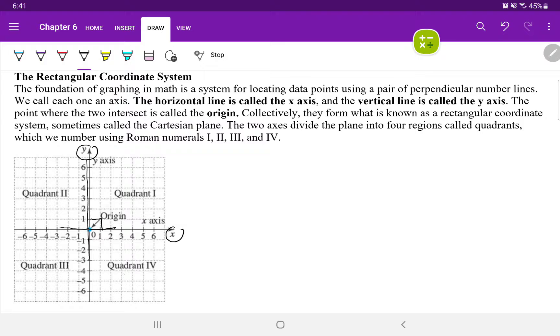The horizontal line is called the x-axis. The vertical line is called the y-axis. The point where the two intersect is called the origin. Collectively, they form what is known as the Rectangular Coordinate System, sometimes called the Cartesian plane. The two axes divide the plane into four regions called quadrants, which we number using Roman numerals.